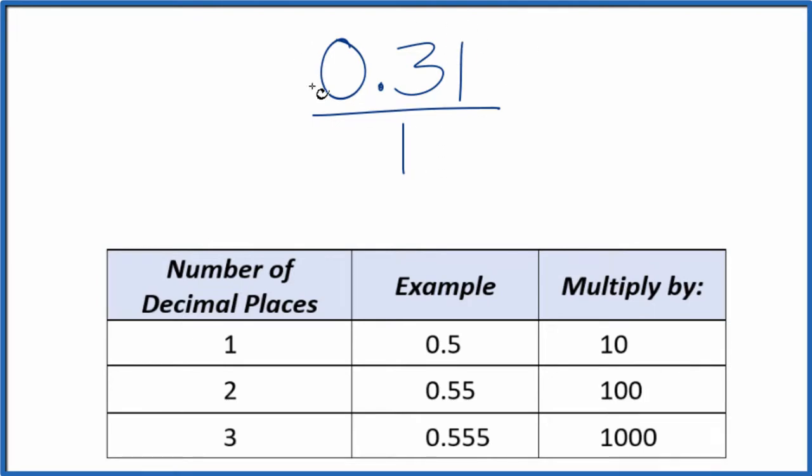Next we need to get this 0.31 to a whole number. We have two decimal places. We're going to multiply by 100.